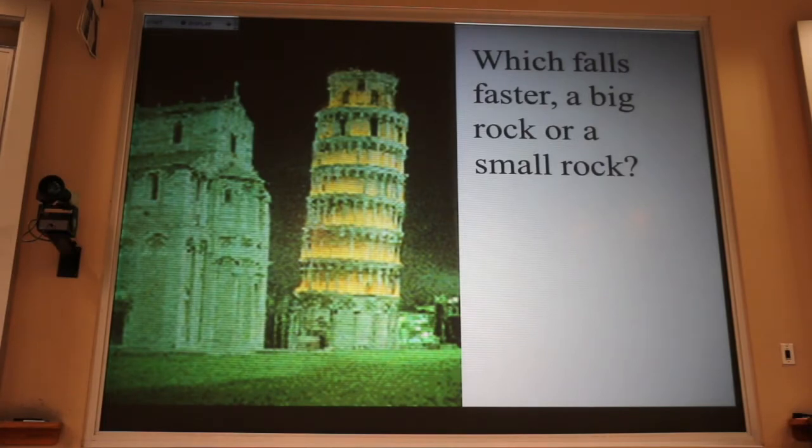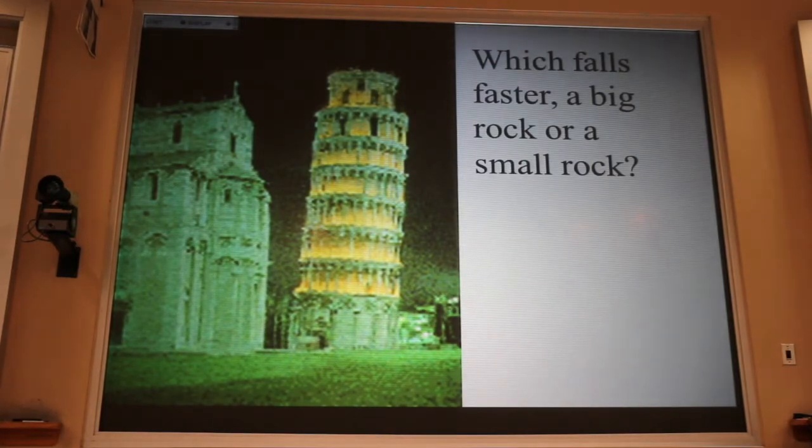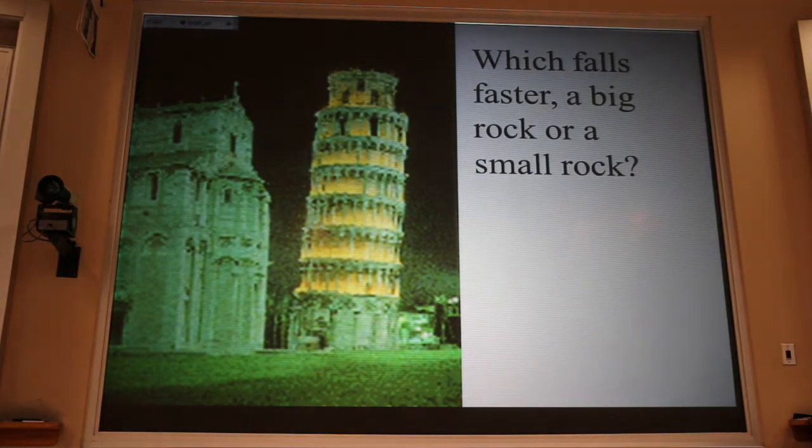Fortunately, my dad was just cheap enough that there was no way he was going to pay to take a bunch of kids up there, so I didn't have to go. Now, you all know the famous story that Galileo, the great scientist, is supposed to have gone up there with two rocks, one little rock, one big rock, and dropped them, and they land at the same time.